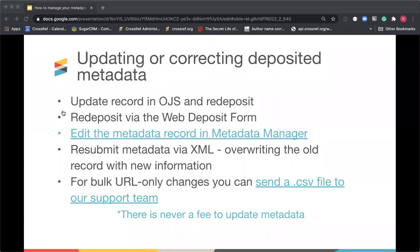My colleague Shane recently wrote a blog about how to edit the metadata record in our Metadata Manager tool — it will bring up the existing metadata for a DOI so you can overwrite it, make changes, and resubmit. If you use XML, you can correct the XML directly and upload it back into our systems, and we'll overwrite the old record. For URL updates only — say your content moved to a new website — you can send a CSV file to our support team containing your DOIs and the new URLs they should point to, and we'll make that update for you.